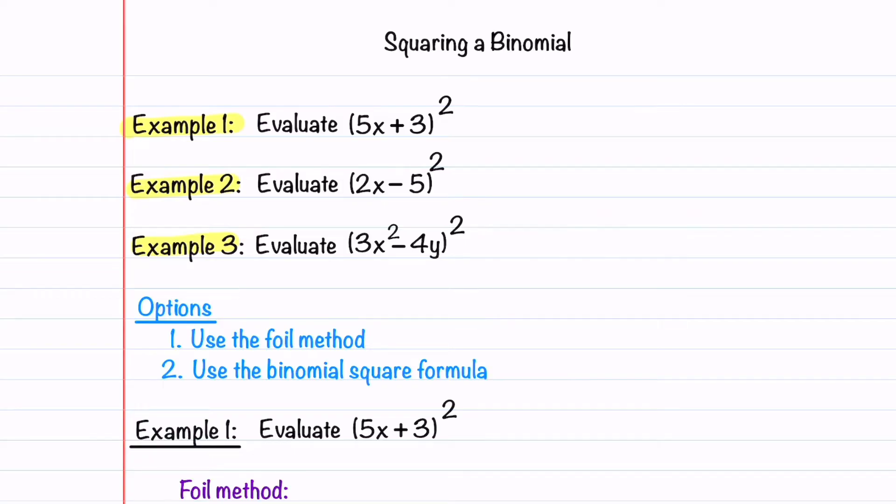When you square a binomial, there's two ways to do it. You can use the FOIL method or you can use the binomial square formula, which is what I would call the easy way.